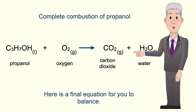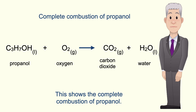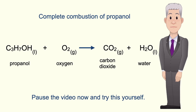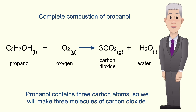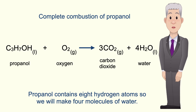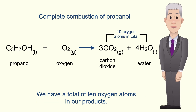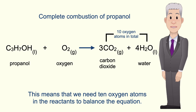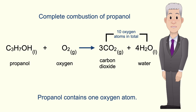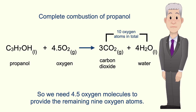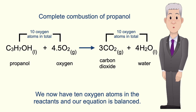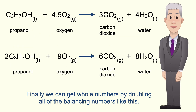Here's a final equation for you to balance — the complete combustion of propanol. Pause the video now and try this yourself. Propanol contains three carbon atoms so we'll make three molecules of carbon dioxide. Propanol contains eight hydrogen atoms so we'll make four molecules of water. We have a total of 10 oxygen atoms in our products, so we need 10 oxygen atoms in the reactants. Propanol contains one oxygen atom, so we need 4.5 oxygen molecules to provide the remaining nine oxygen atoms. We now have 10 oxygen atoms in the reactants and our equation is balanced. Finally, we can get whole numbers by doubling all of the balancing numbers.